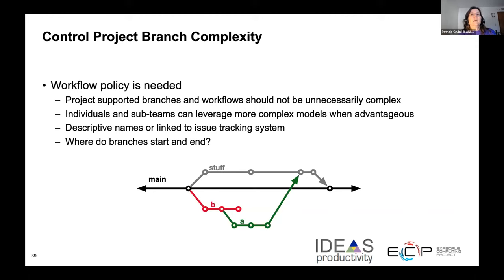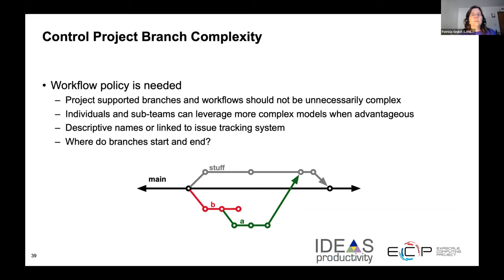Workflow policies aid collaboration. Policies prevent unnecessary complexity and make collaboration more efficient. In the case illustrated, there are two branches with names that are not meaningful, and they start and end from different places. If policies are not clearly documented and there are many developers making these types of changes, the result would be a repository with many complex branches and parallel development would be difficult. Some helpful policies include giving branches descriptive or meaningful names, naming the branch for the feature or linking it to an issue, and setting a policy for where branches start — such as all branches must begin from main and be merged into main or another principal branch.